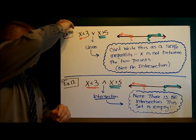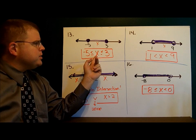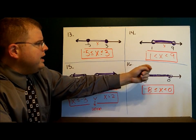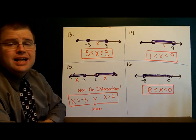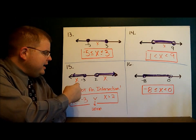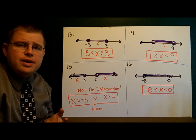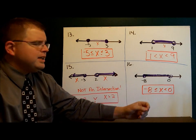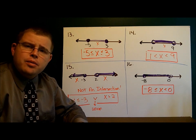Let's see how you did. Example 13 is an intersection — x is in between negative 5 and 3, so we have negative 5 ≤ x ≤ 3. Number 14, x is also between 2 points — x is between 1 and 9, so 1 < x < 9. Number 15 is not an intersection, so we write the union: x is less than negative 3, or x is greater than 2. We can't simplify it if it's a union. Finally, number 16: x is in between negative 8 and 0, so here's that notation. This is how you can write an intersection using much more simplistic notation when working with compound inequalities.